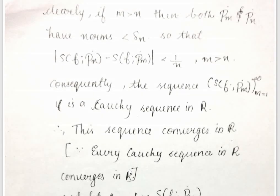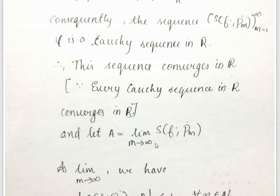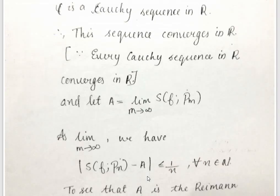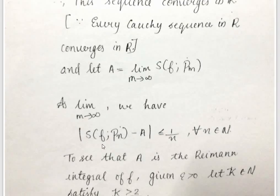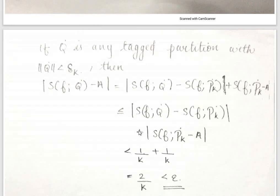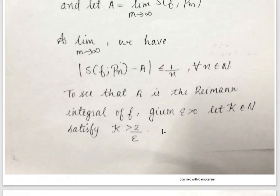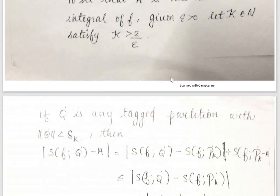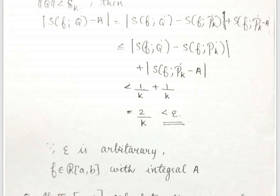That same sequence is convergent. Let the limit as m tends to infinity of S(P_m-dot) equal A. We see that A is the Riemann integral of f. Given epsilon > 0, let k element of ℕ satisfy k > 2/epsilon. If Q-dot is any tagged partition with norm of Q-dot less than delta_k, then |S(Q-dot) − A| ≤ |S(Q-dot) − S(P_k-dot)| + |S(P_k-dot) − A| by the triangle inequality, which is less than 1/k + 1/k = 2/k < epsilon. Since epsilon is arbitrary, f is Riemann Integrable.